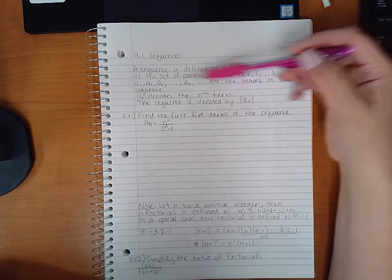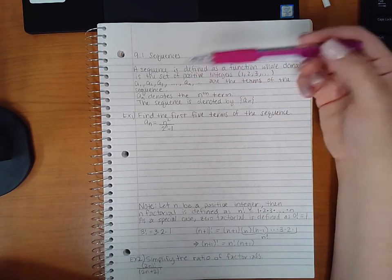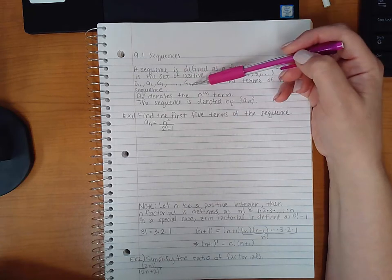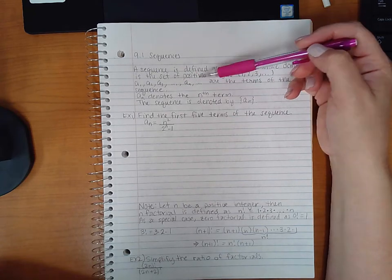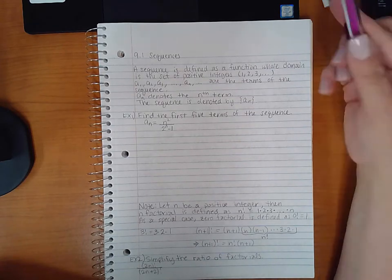AN denotes the nth term. So A1 is the first term, A2 is the second term, A3 is the third term, so on and so forth, until you get to the nth term, and then there are some still after the nth term, depending on your domain.